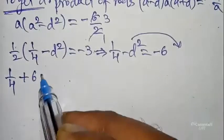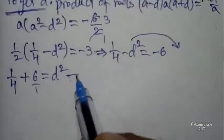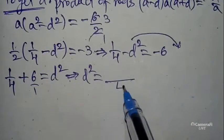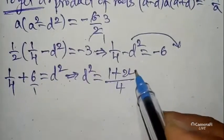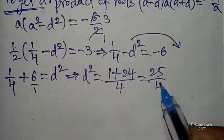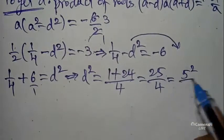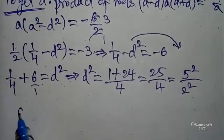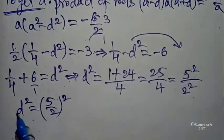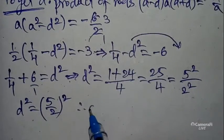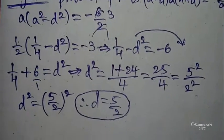Bringing terms together: d² equals 1/4 plus 6. Taking LCM 4: d² equals (1 plus 24)/4 equals 25/4. This can be written as 5²/2², which is (5/2)². Therefore d equals 5/2. So we have a equals 1/2 and d equals 5/2.